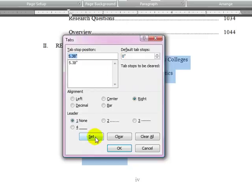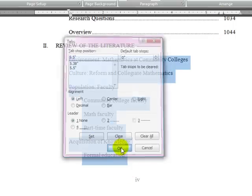Then we're going to make another one at five point five that's left justified with no dot leader. That creates the second tab and we'll make sure we set that so you see both tabs appear down here and then click OK.